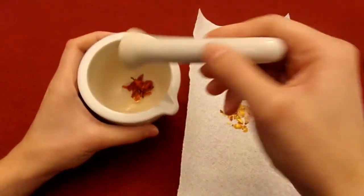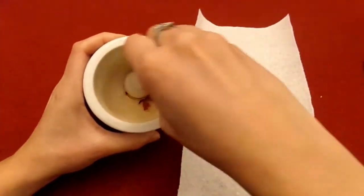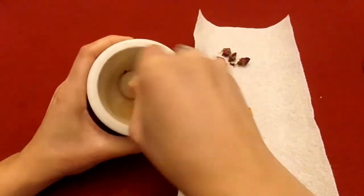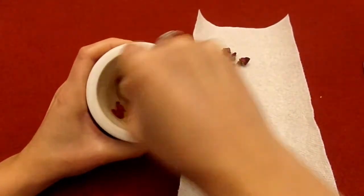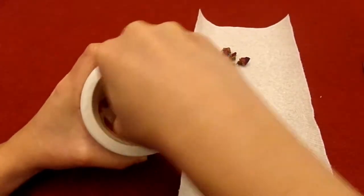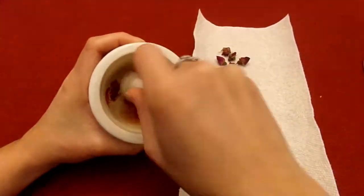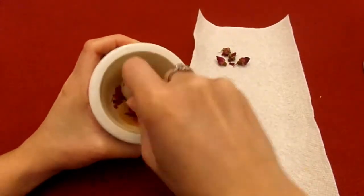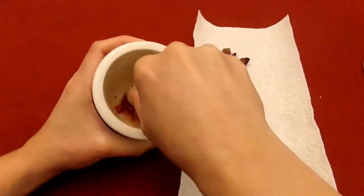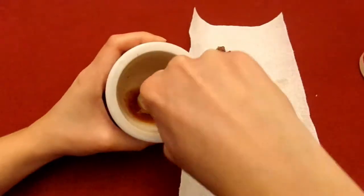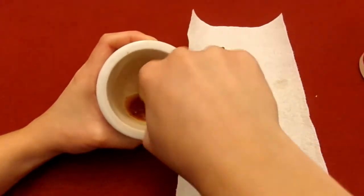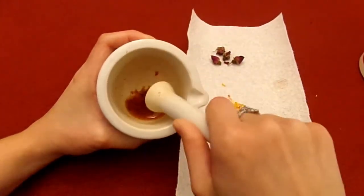Then take your pestle and start grinding the flowers. Make sure you use a good amount of force to really crush up the flowers. Spend at least a few minutes crushing up the petals and the acetone should have taken on a bright color.